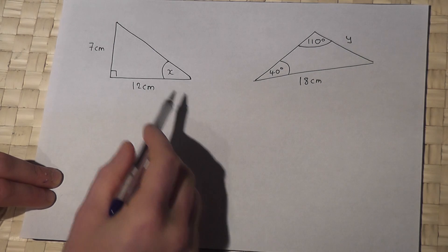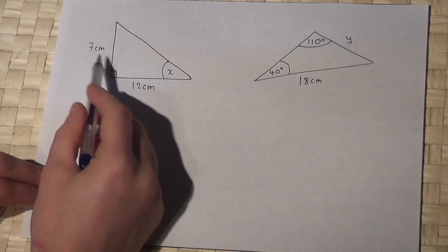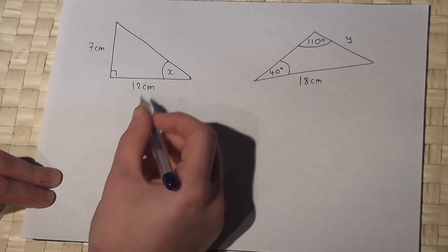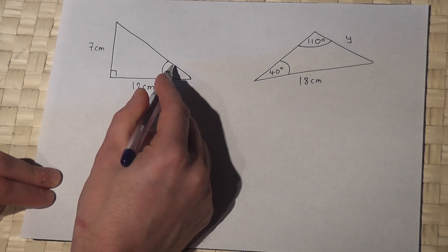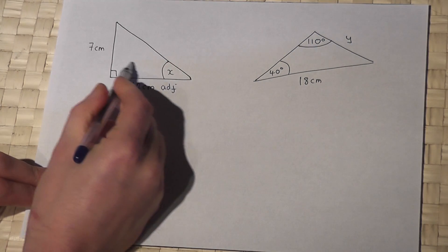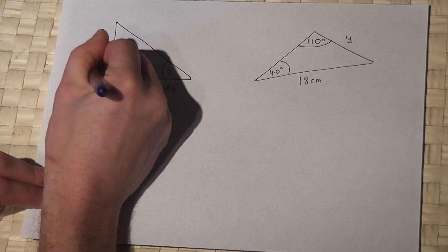So the method here is to label the sides as either opposite, adjacent or hypotenuse. Now that's the hypotenuse. This side here is next to the angle, so that's the adjacent. And this side here is opposite the angle, so that's the opposite.